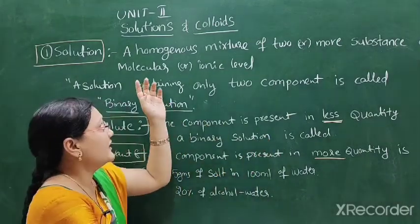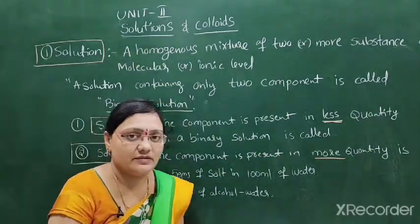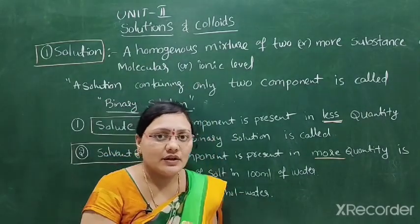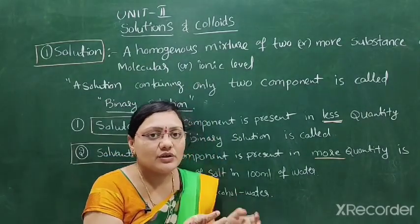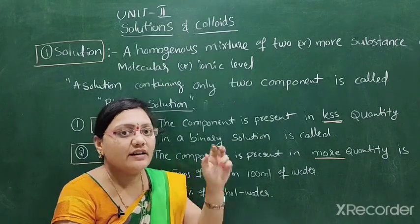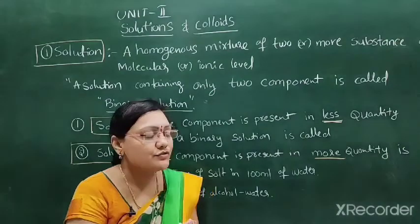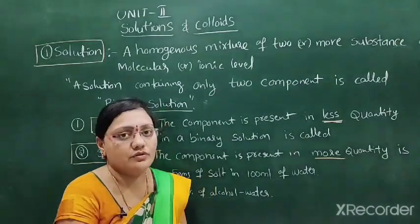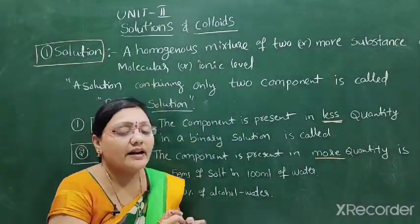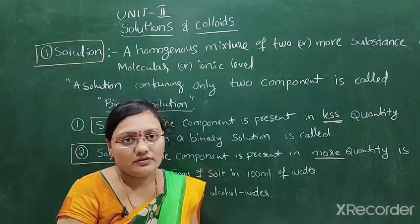The second unit is very, very important — Solutions and Colloids. A solution is defined as a homogeneous mixture of two or more substances at a molecular or ionic level.